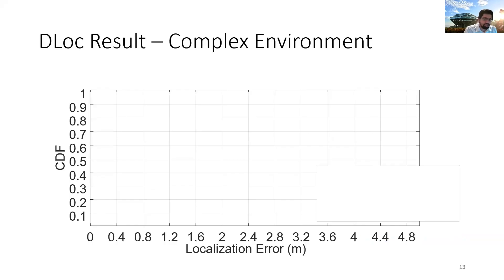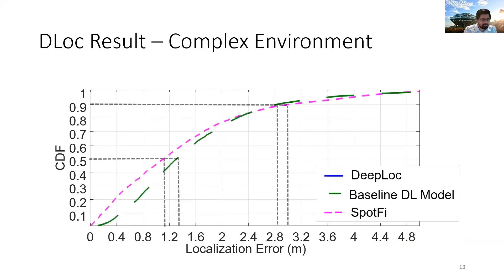We use these datasets and compare against two state-of-the-art localization algorithms, SpotFi and Baseline Deep Learning Model. While they show very high median 90% errors, you can see that DLoc outperforms both of them by at least 85% at both median and 90%. Please refer to our paper and one-minute video for further details.